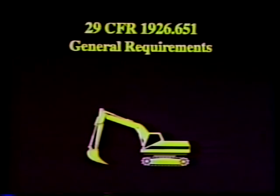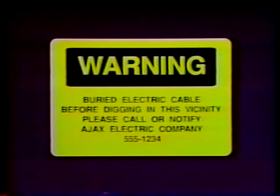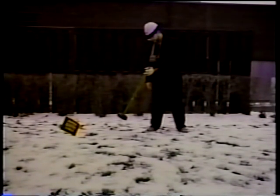All surface encumbrances such as trees or boulders that are located so as to create a hazard must be removed or supported to safeguard workers. The estimated location of utility installations, such as sewer, water, fuel, and electric lines, or any other underground installations that may reasonably be encountered during excavation work, are to be determined prior to opening the ground. Prior to the start of actual operations, the utility companies or owners are to be advised of the proposed work and asked to establish the underground installation's actual location. When the utility or owner cannot establish exact locations or respond in a timely manner, the contractor may proceed with caution. Detection equipment or other acceptable means to locate utility installations must be used. When excavation work nears the estimated location of the installations, the exact location is to be found by safe and acceptable means.